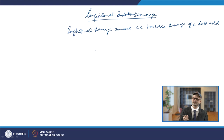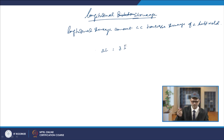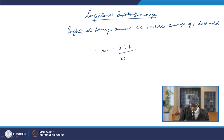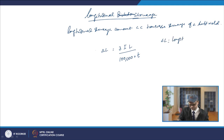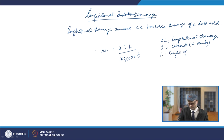Longitudinal shrinkage can be quantitatively represented by the formula: ΔL = (3 × I × L) / (10⁵ × T), where I is the welding current in amperes, L is the length of the weld in mm, and T is the plate thickness in mm.